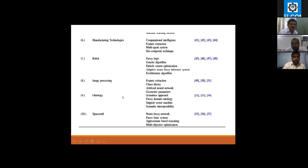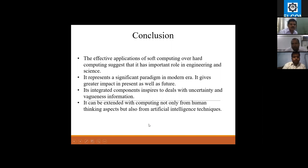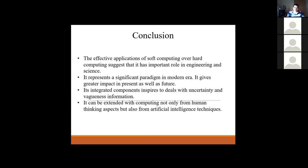This is my conclusion. The effective application of soft computing over hard computing suggests that it has an important role in engineering and science. It represents a significant variety in modern areas. It gives greater impact in present as well as future. Its integrated components are able to deal with uncertainty and vagueness information. It can be extended with computing not only from human thinking aspect but also from artificial intelligence technique.